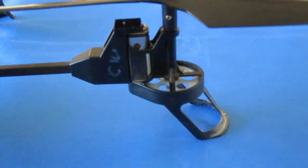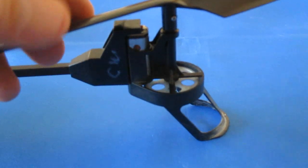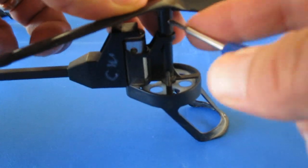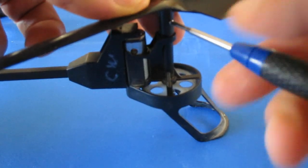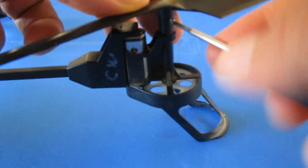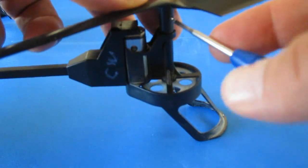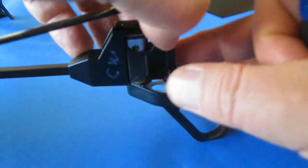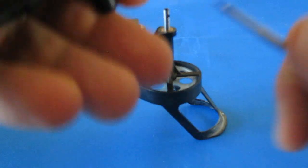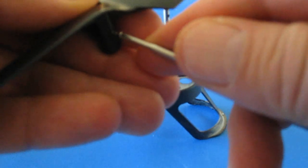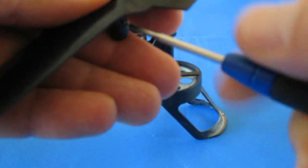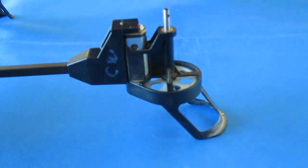The first thing you're going to want to do is remove the propeller from the quadcopter. Pretty simple, just remove the screw, then lift up on the propeller, and reinsert that screw so you don't lose it, and then place the propeller aside.